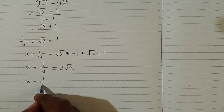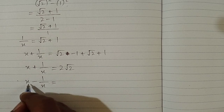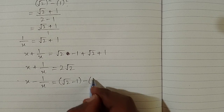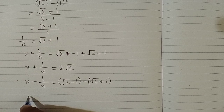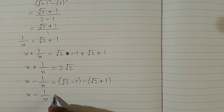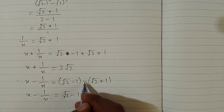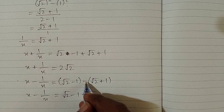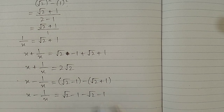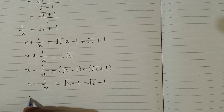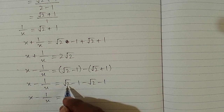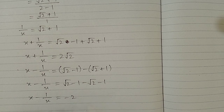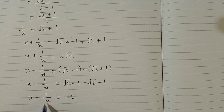Now we find the value of x minus 1 upon x. The value of x is square root of 2 minus 1, minus the value of 1 upon x which is square root of 2 plus 1. So x minus 1 upon x equals square root of 2 minus square root of 2, which is 0, and minus 1 minus 1 is minus 2. So the value of x minus 1 upon x is minus 2.